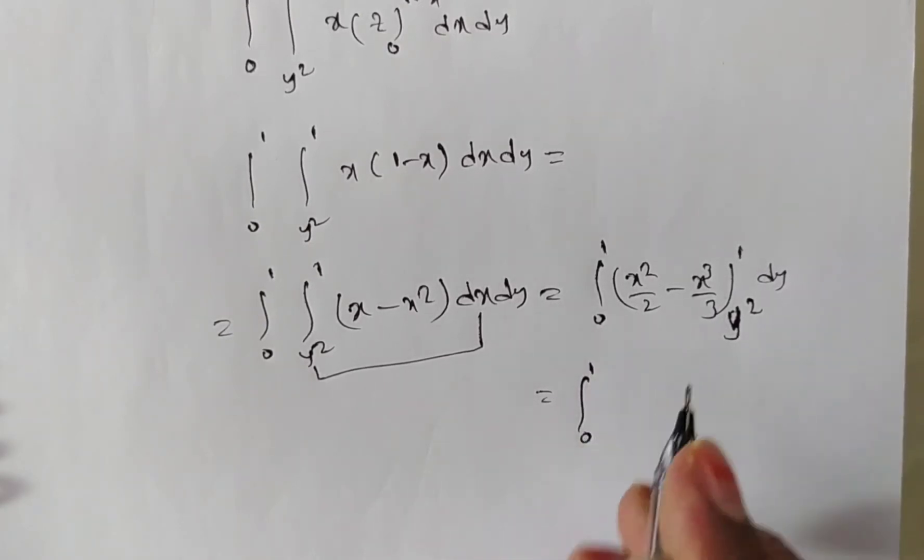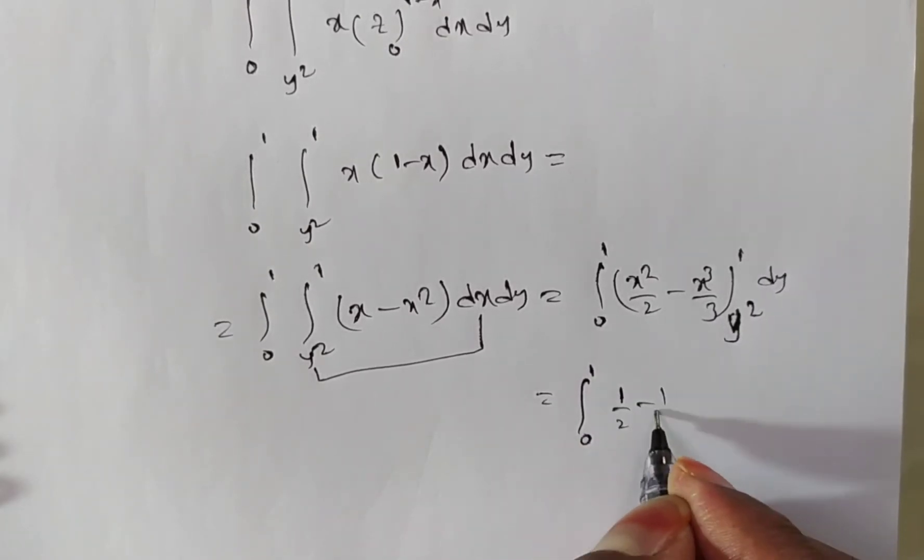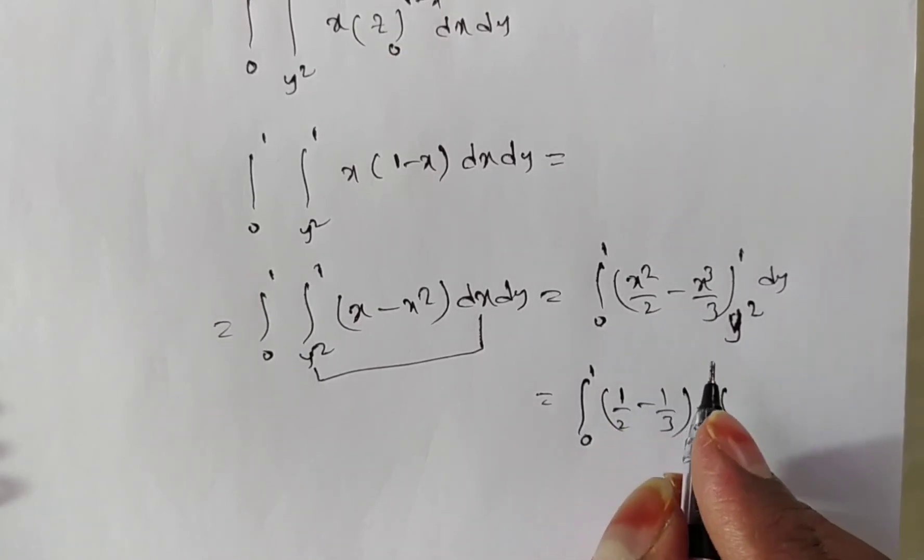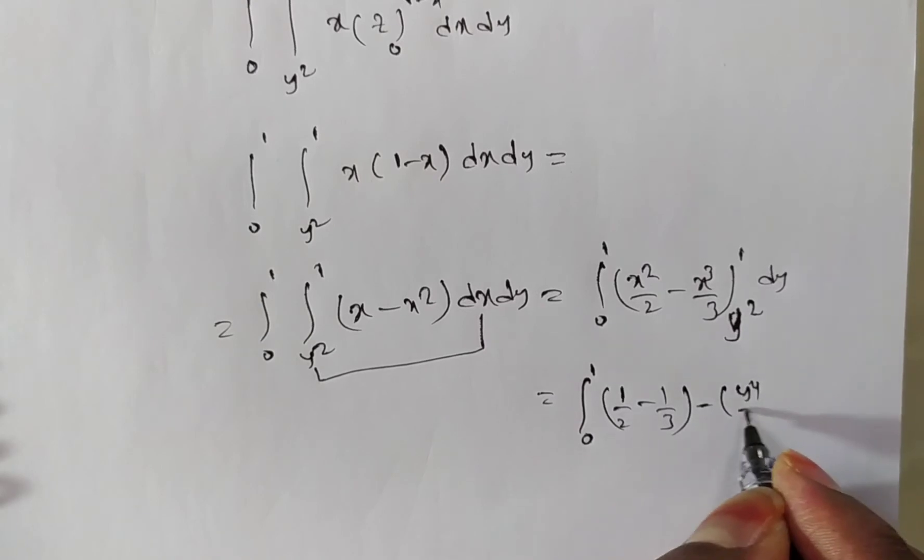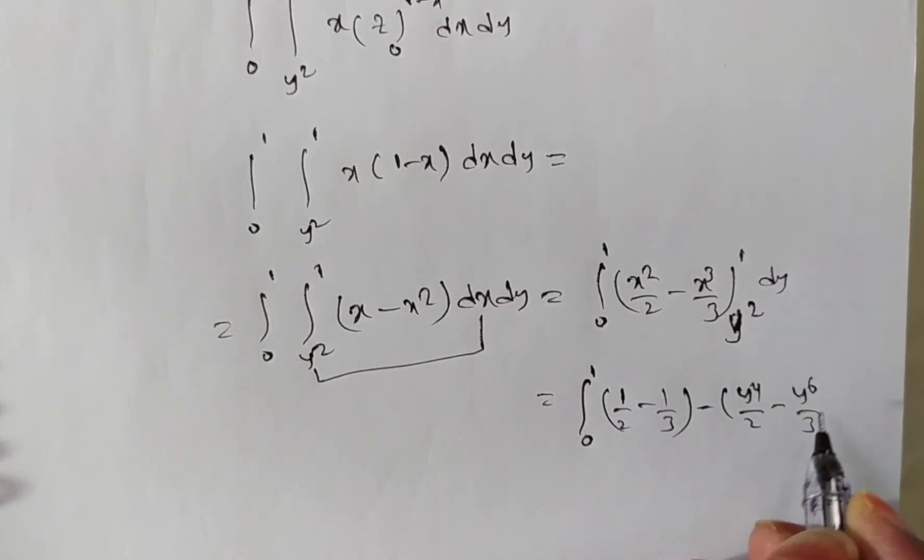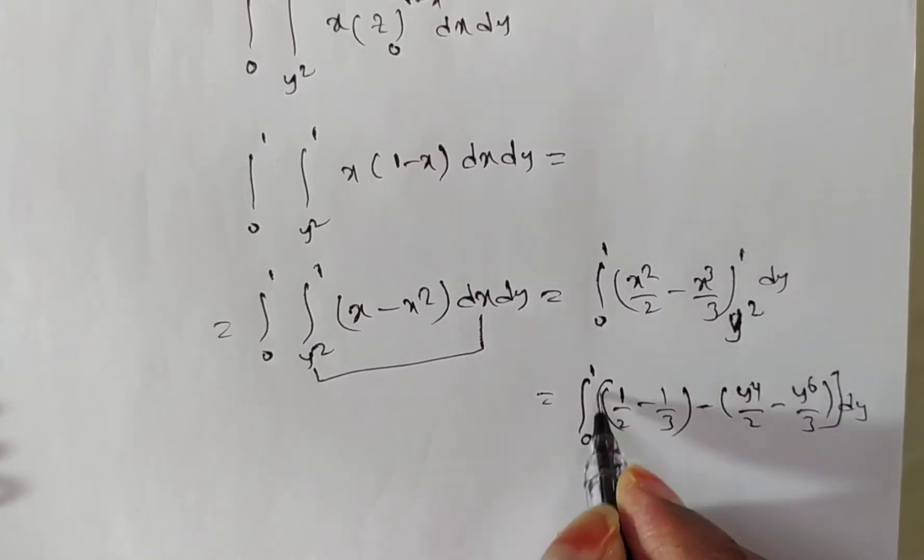So if you are substituted upper limit first, this is 1 by 2 minus 1 by 3 minus y square all square is nothing but y to the power of 4 by 2 minus y square all cube is nothing but y power 6 by 3 into dy.